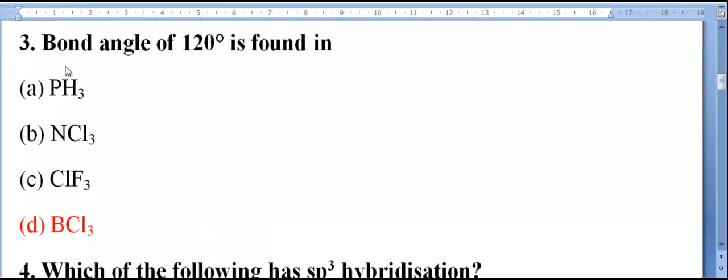Bond angle of 120 degrees is found in: PH3, NCl3, ClF3, or BCl3. It is boron trichloride. Bond angle of 120 degrees is found in boron trichloride, is it right? That is the last option.